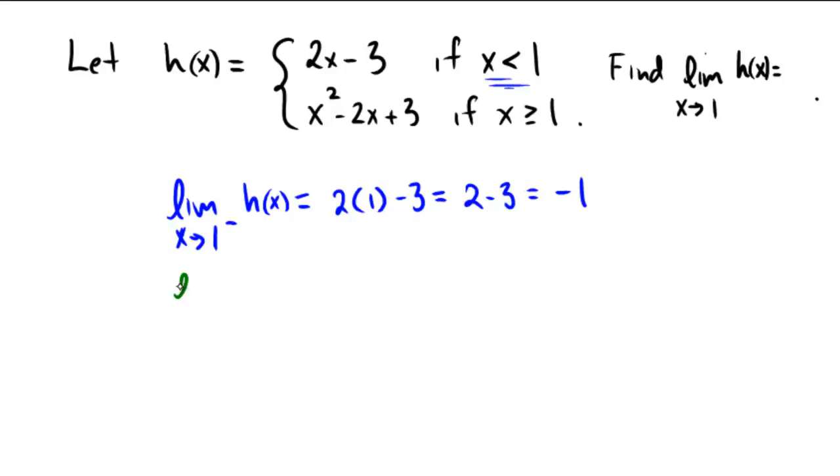On the other hand, if we were on a limit as x approaches 1, but we said that we were going to come in from the right, that means now we're bigger than or equal to 1, so we'd be following the bottom rule. And the bottom rule says that, well, as we get close to 1, we'd be getting 1 squared minus 2 times 1 plus 3, which is 1 minus 2 plus 3.